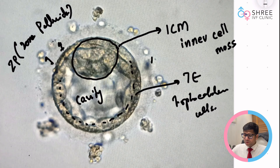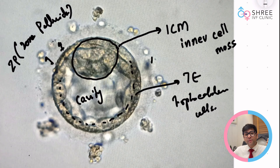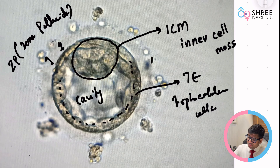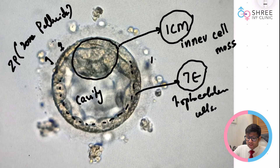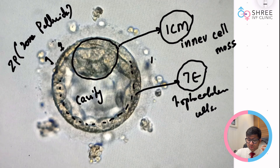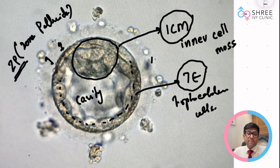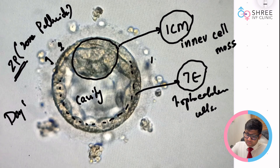This outer covering is called the ZP — zona pellucida. As a patient, remember we are going to grade the embryo based on the structure of the ICM, the structure and appearance of the trophectoderm cells, and sometimes the thickness of the zona pellucida. This otherwise appears to be a great embryo, but it is important to understand whether it is a day 5 or day 6 embryo.